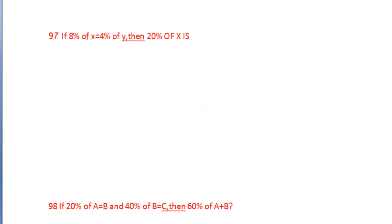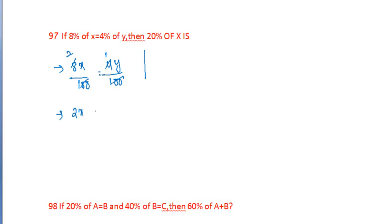97th question. If 8% of X is equal to 4% of Y, then 20% of X is another. So 8X by 100 equals 4Y by 100, the 100s cancel, giving 2X equals Y. So 20% of X equals 10% of Y.